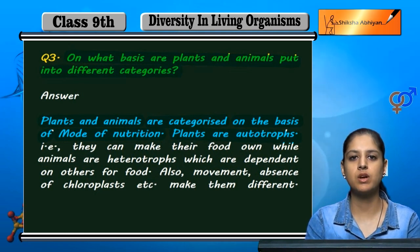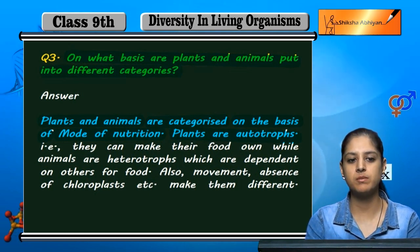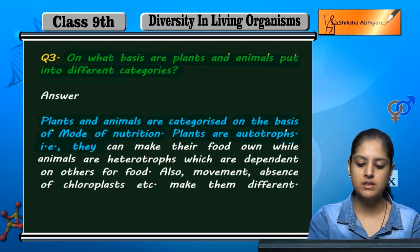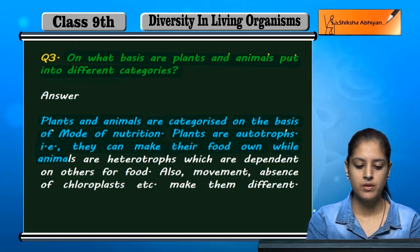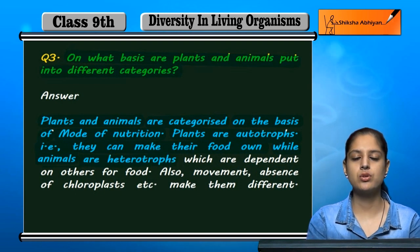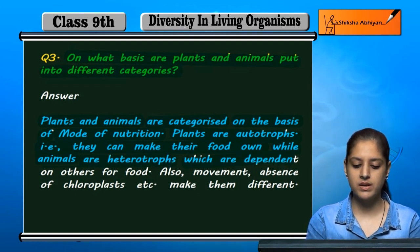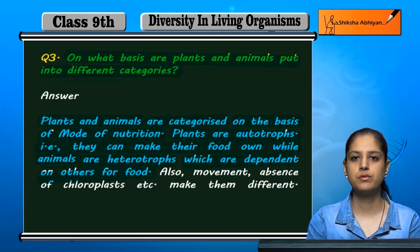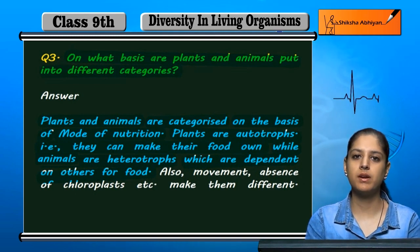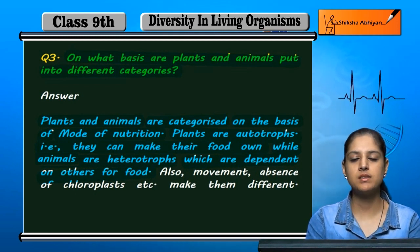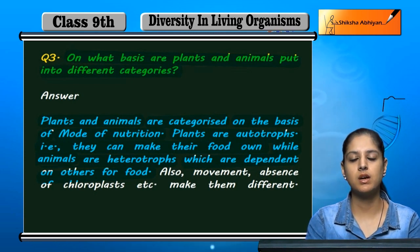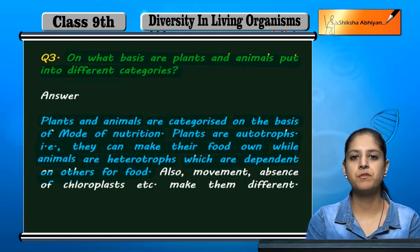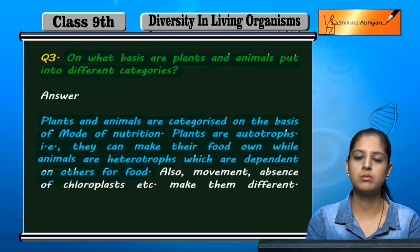Plants are autotrophs — they can prepare their own food. Animals are heterotrophs, which are dependent on others for food. Plants can make their food on their own, so this is the difference in the mode of nutrition to obtain food.